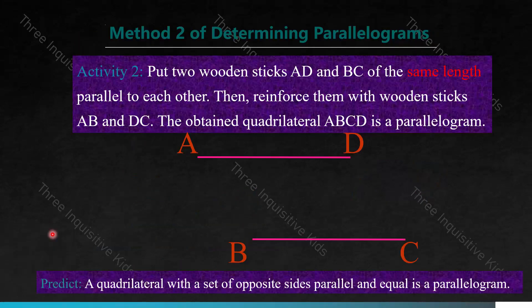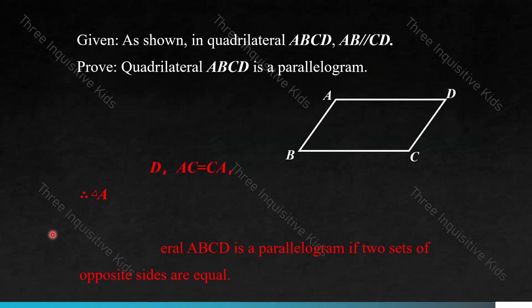Here is the second method of determining parallelograms. Activity two: put two wooden sticks AD and BC of the same length parallel to each other, then reinforce them with wooden sticks AB and CD. The obtained quadrilateral ABCD is a parallelogram. Predict: a quadrilateral with a set of opposite sides that are both parallel and equal is a parallelogram. Given quadrilateral ABCD where AB is parallel to CD, prove that this is a parallelogram.